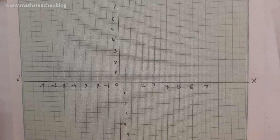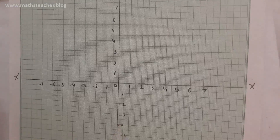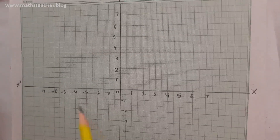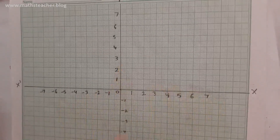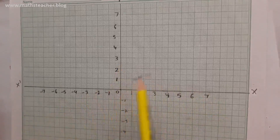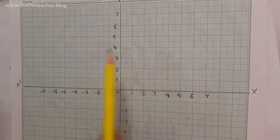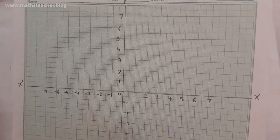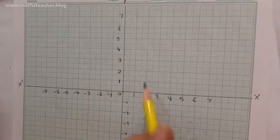Now we will plot the coordinates on these axes. As I introduced you in exercise 3.2, when you join the two axes, there are 4 quadrants — the 1st quadrant, 2nd quadrant, 3rd quadrant, and 4th quadrant. You need to remember the axes so you will know which coordinates will be positive and which will be negative.